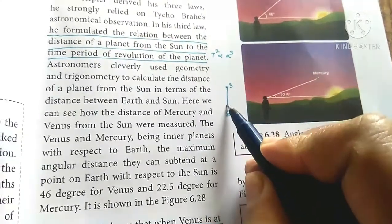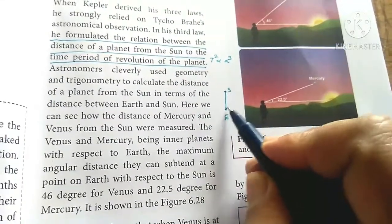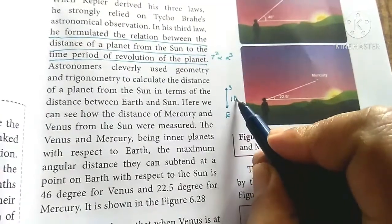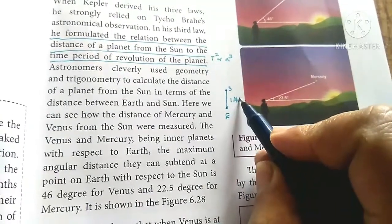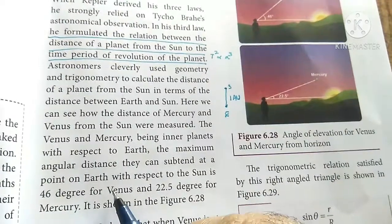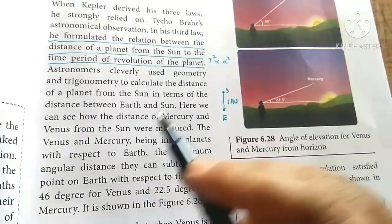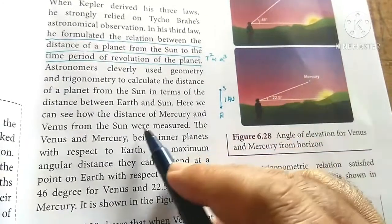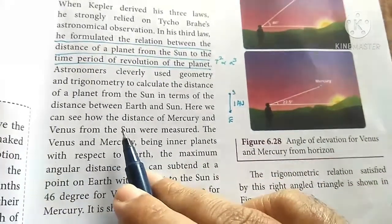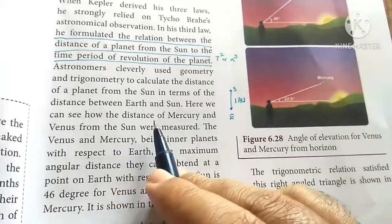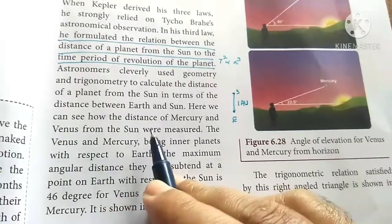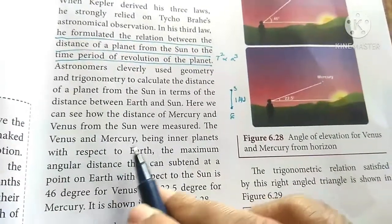The average distance is one astronomical unit. Here we can see how distance of Mercury and Venus from the sun were measured.